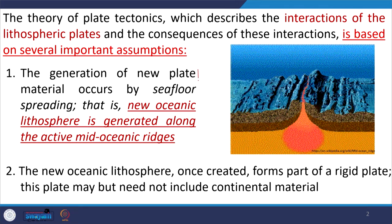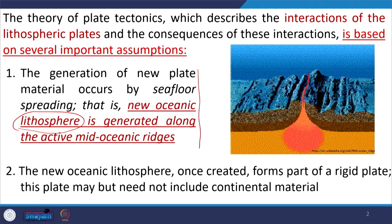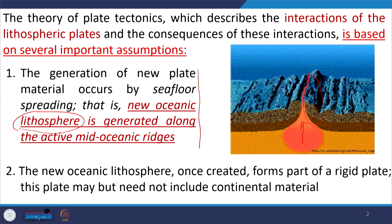It is very important to understand that new oceanic lithosphere is generated at the mid-oceanic ridge. If you see here, we have a magma chamber at the mid-oceanic ridge system, and magma is being supplied and forming the oceanic lithosphere — creating the crust, the Moho, and the upper part of the mantle above the asthenosphere, which forms the lithosphere. New plate material is generated at seafloor spreading only at the mid-oceanic ridge.